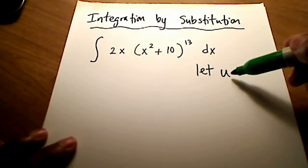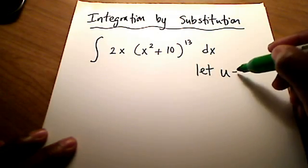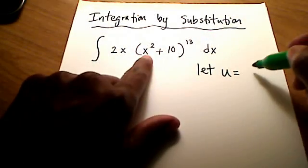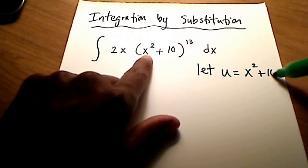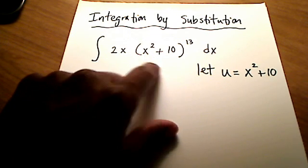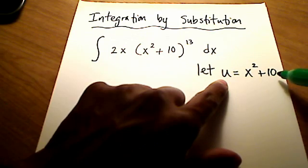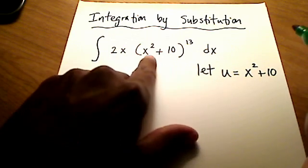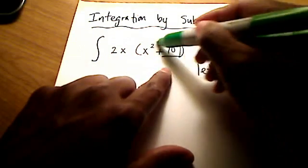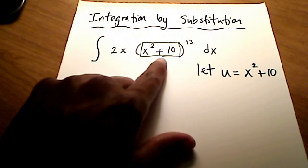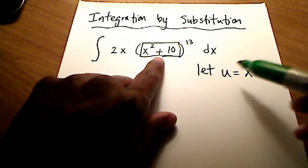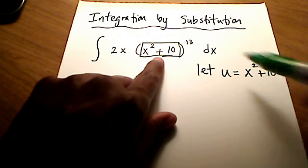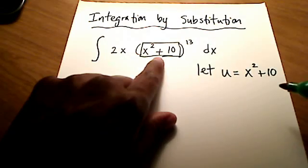Let's let U equal the stuff inside this parenthesis, which is x squared plus 10. So if U is equal to x squared plus 10, then I hope you see that inside here, what I'm putting in a block right here, I'm going to substitute, I'm going to rewrite that as the letter U in just a bit here. So it's going to be U to the 13th in just a moment.